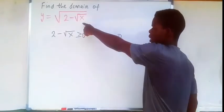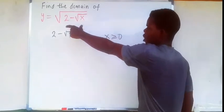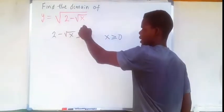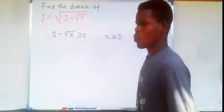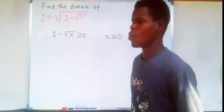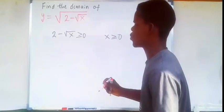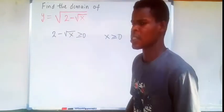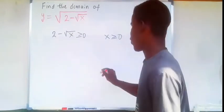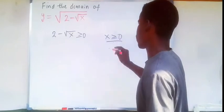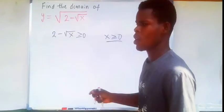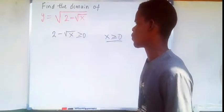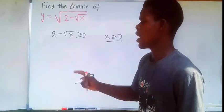We're considering x in the inner square root, and the full radicand in the outer square root. We need to isolate x in both inequalities. For the second inequality, x is already isolated, so we work on the first one.